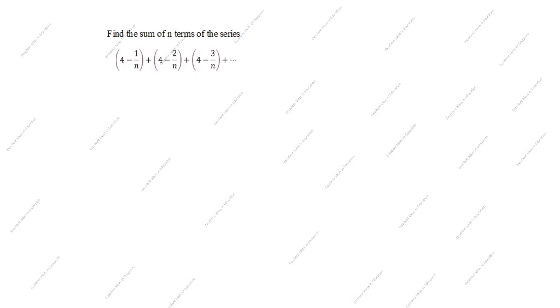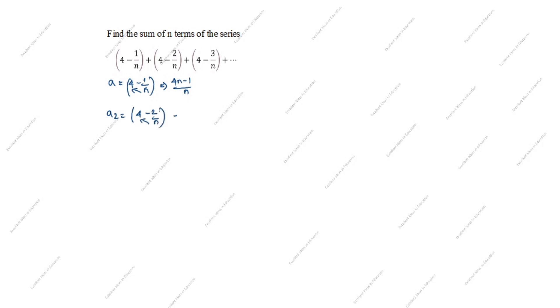First, we identify the first term a1 = 4 - 1/n, which simplifies to (4n - 1)/n. The second term is a2 = 4 - 2/n, which simplifies to (4n - 2)/n. Now we will find the common difference d.